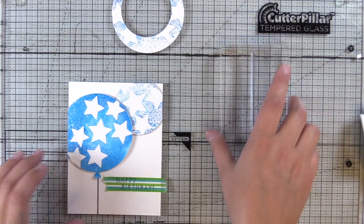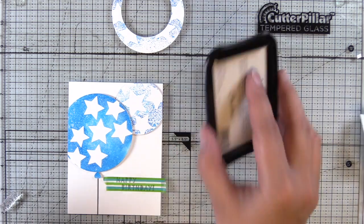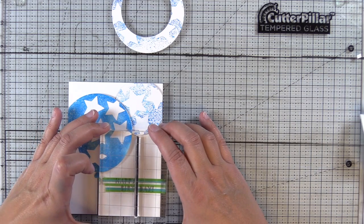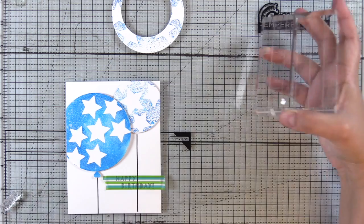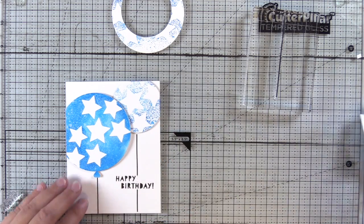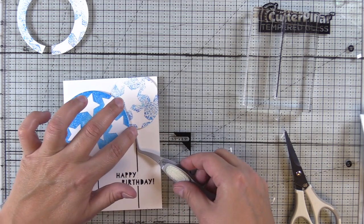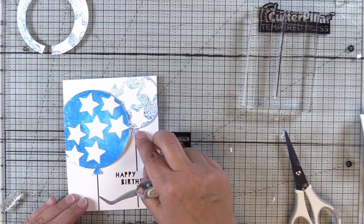Now we need to mask our sentiment because I want to stamp the other balloon string, so I'm just using a piece of washi tape or any kind of masking paper that you have. I just got some of the sticky off on my hand so we'll press that down, peel up the tape, I'll get the other balloon popped up on some foam, add some sequins and these cards will be done.